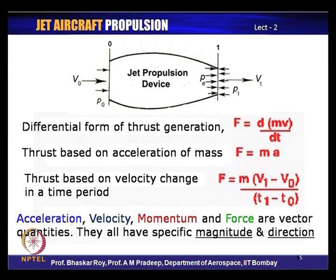The next way of looking at it is the acceleration of mass. A certain amount of mass is available for thrust creation, and this mass is accelerated by the propulsive system — that is another way of looking at thrust generation. The acceleration is measured through the propulsive system for the mass of air going in. Acceleration of the mass of air equals thrust generation. The other simple way is that thrust is written in terms of velocity change over a time period.